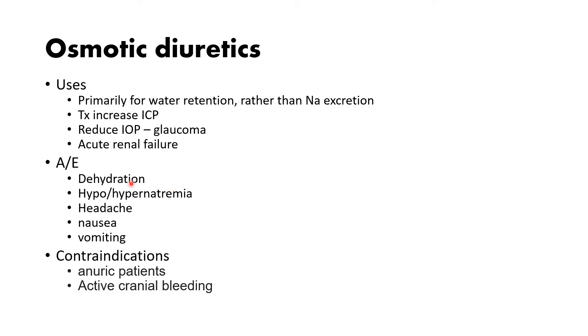Hyponatremia can follow because we can pee out sodium with water — as we know, sodium and water love each other, so if we pee out water, then we can pee out a lot of sodium as well.